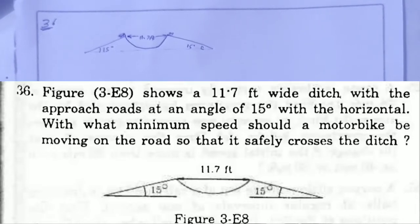With what minimum speed should a motorbike be moving on the road so that it safely crosses the ditch, assuming that the length of the bike is 5 feet and it leaves the road when the front part runs out of the approach road.